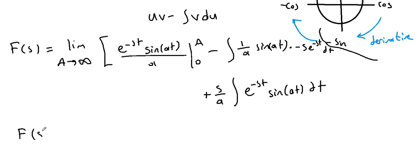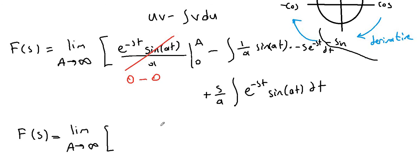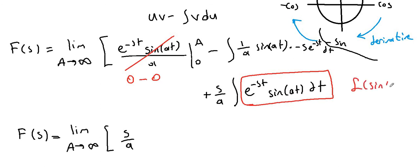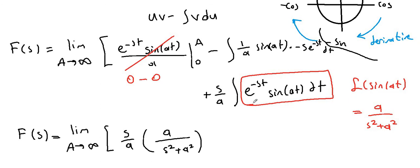Cleaning up: f of s equals the limit as A approaches infinity. Plugging in the upper boundary A, e to the negative infinity is 0, so the upper boundary term is 0. Plugging in the lower boundary 0, sine of 0 is 0, so the lower boundary is also 0 — the whole boundary chunk is 0. We have s over a times this remaining integral, and we know from the previous part that this is the Laplace of sine of at, which equals a over s squared plus a squared. So a cancels a, giving f of s equals s over s squared plus a squared.